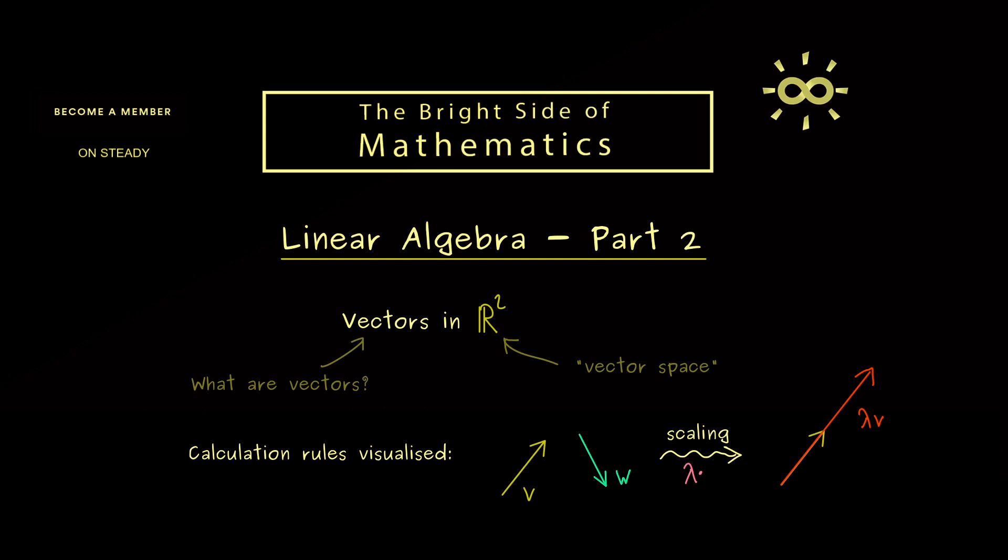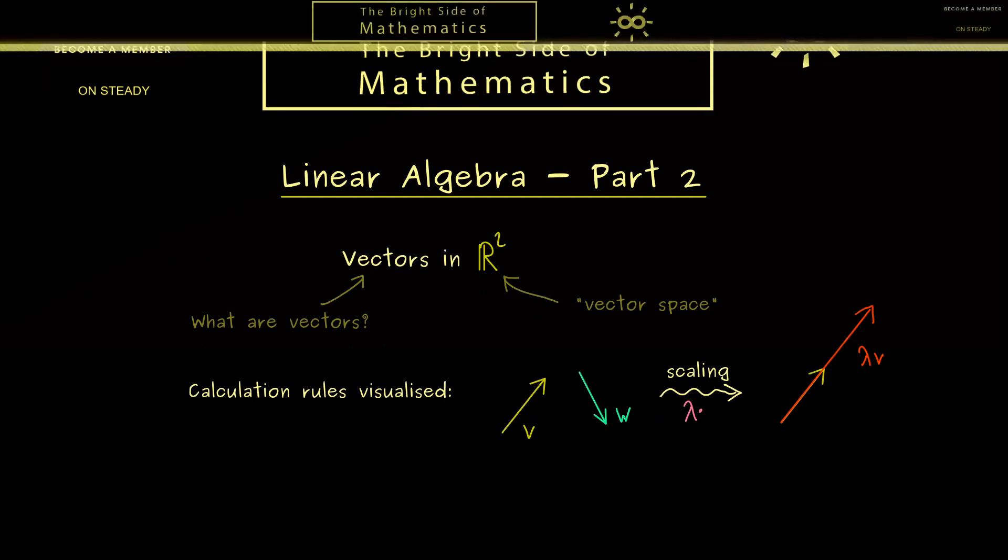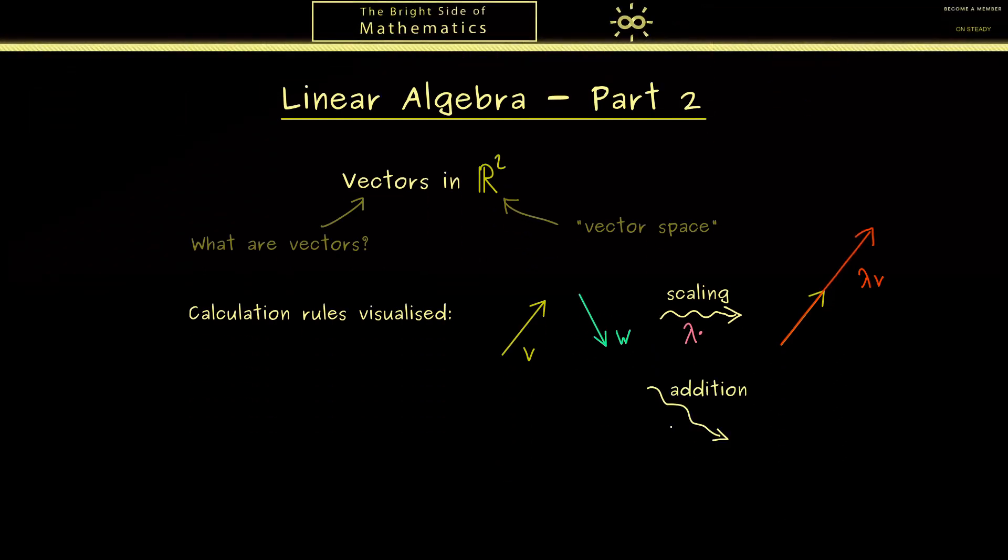And now the second fundamental property is the addition. For this one we need two vectors v and w. Indeed in the visualization this means that we put both arrows together. So we just put the tail of one to the tip of the other one. And then we just connect the other tail and tip. This is the resulting vector we call v plus w.